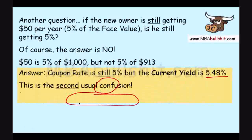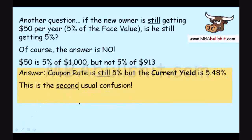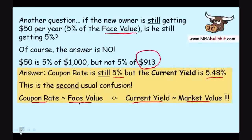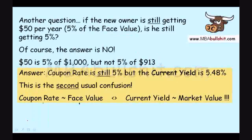This is the second usual confusion. The coupon rate never changes — it is always 5% and it always depends on the face value, which also never changes. However, this new percentage you are getting is called the current yield. So to recap: the coupon rate is how much percent based on the face value, and the current yield is how much percent based on the market value, which in this case is $913. You have to remember this difference.